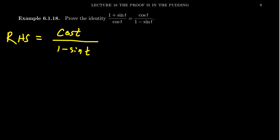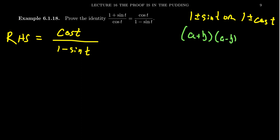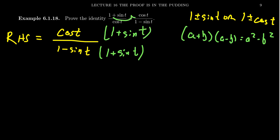Whenever you see things like 1 minus sine, 1 plus sine, 1 plus cosine, or 1 minus cosine — if you see 1 plus or minus sine t or 1 plus or minus cosine t — think of the identity a plus b times a minus b equals a squared minus b squared. That is to say, multiply the bottom by its conjugate: switch the signs. So instead of 1 minus sine t, you get 1 plus sine t. You multiply top and bottom by 1 plus sine t. And we do want 1 plus sine in the numerator, don't we?